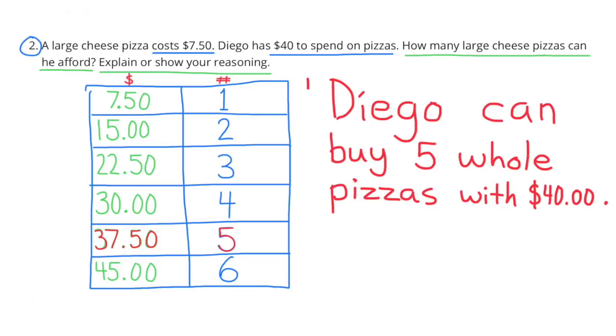I created a chart with the number of pizzas on the right-hand column and the cost in the left-hand column. One pizza costs $7.50. Two pizzas cost $15. Three pizzas cost $7.50 more than two pizzas, so that would be $22.50. Four pizzas, that's easy. You just double the price of two pizzas, so double $15 to get $30.